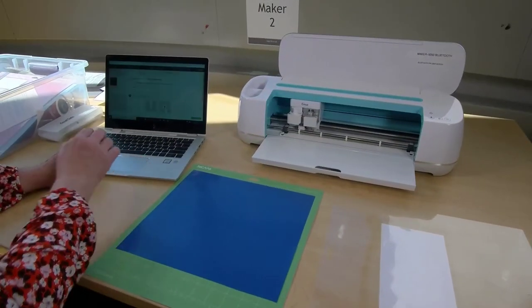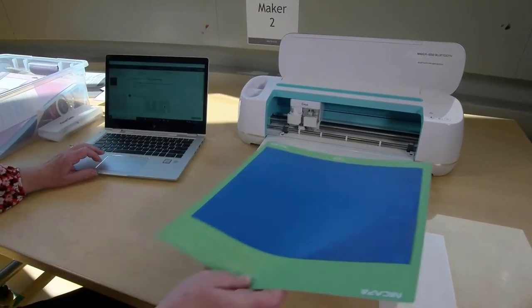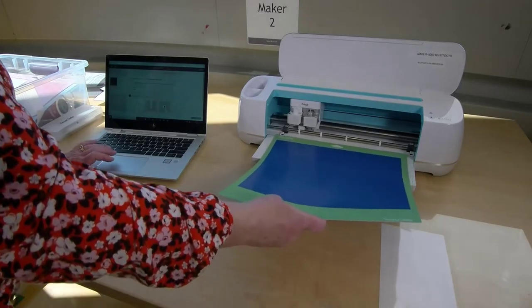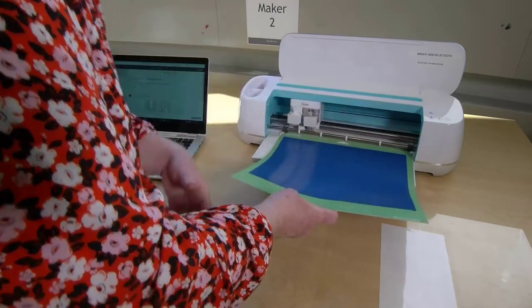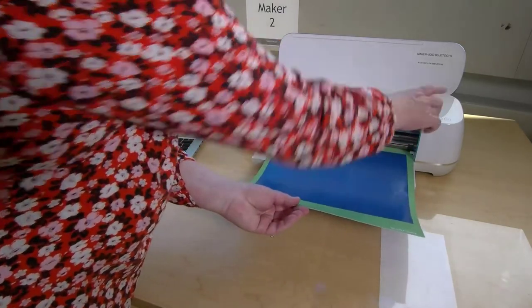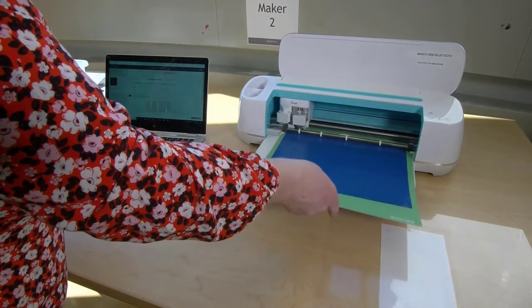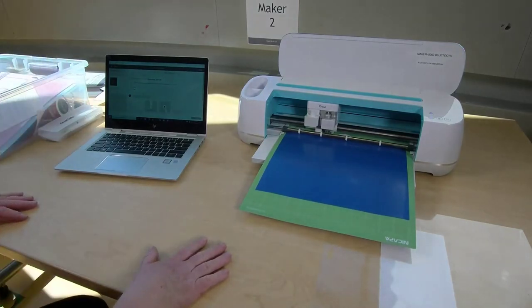Load the mat into the Cricut when the arrow button starts blinking. Remember to make sure the mat is under the two white plastic guides on either side of the machine, and start your project by pushing the button with the C when it starts blinking.